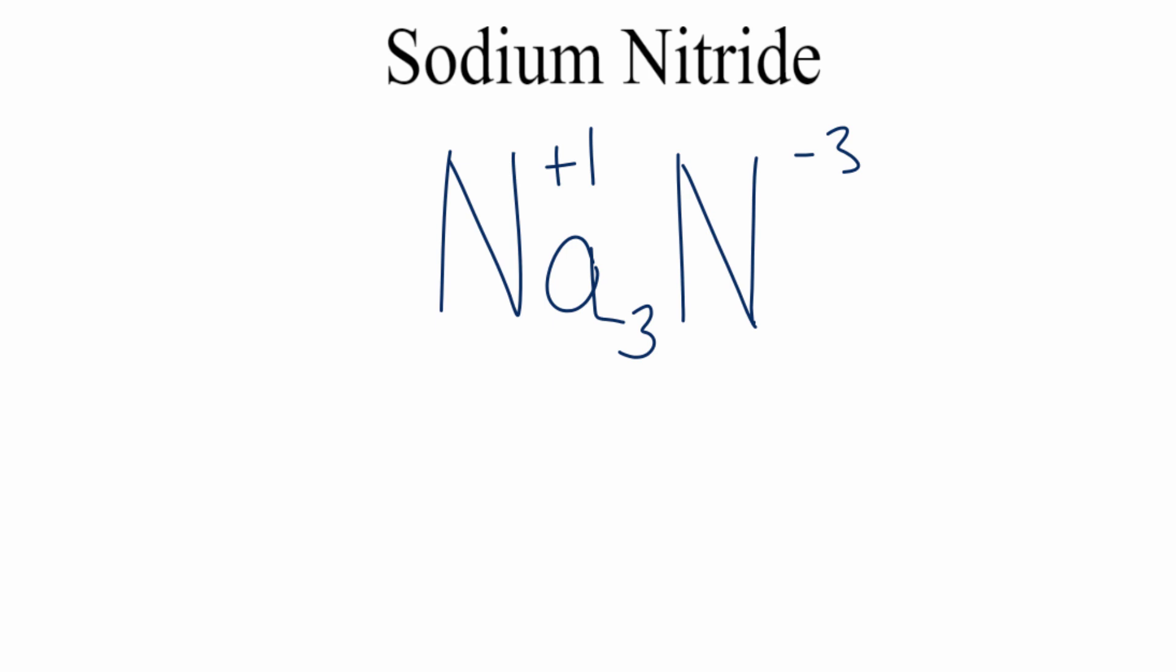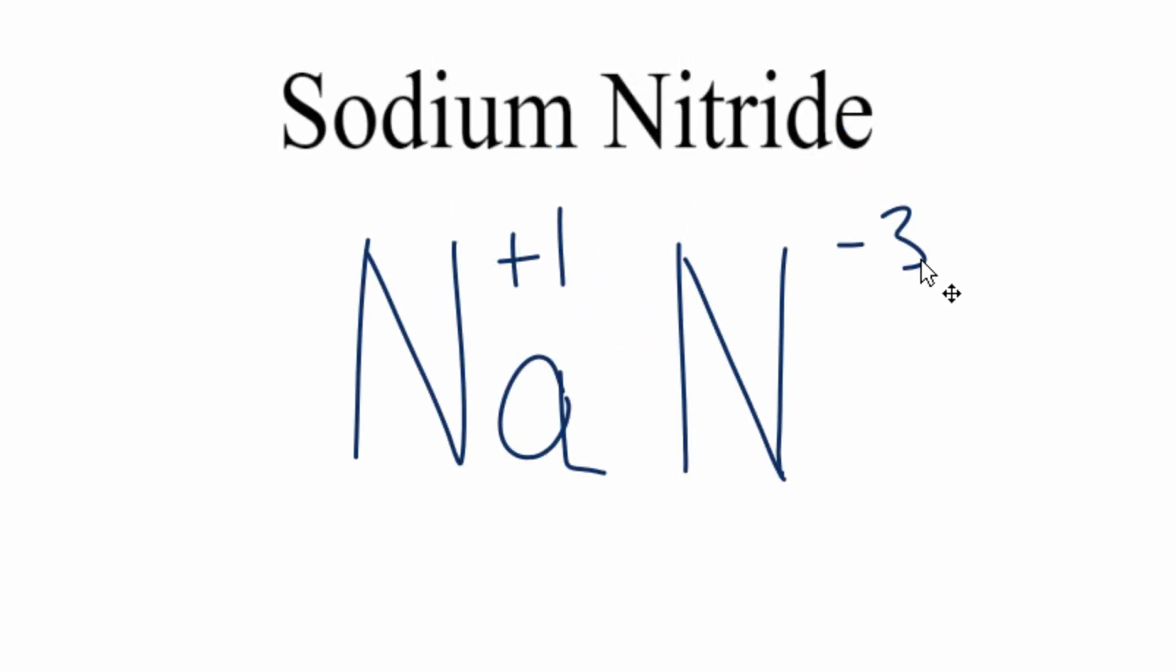We can check our work using the crisscross method. We take the three from the charge on the nitrogen, we move it down here, we take the one on the sodium and move it here, and we don't really need to write the one. Get rid of these here, and it's the same result. Na3N is the formula for sodium nitride.